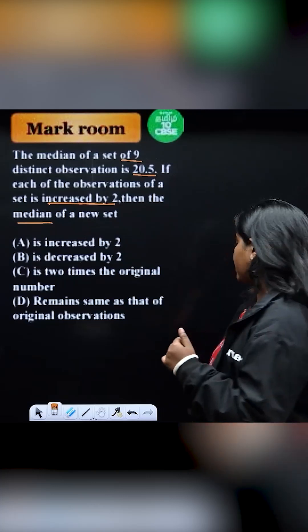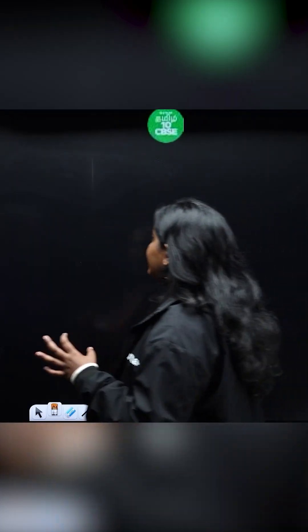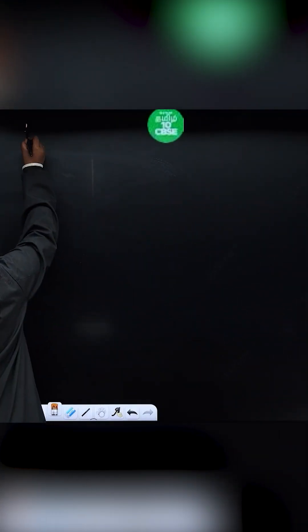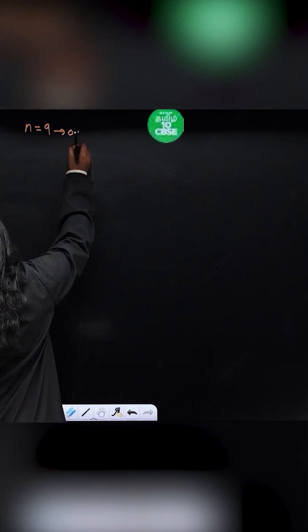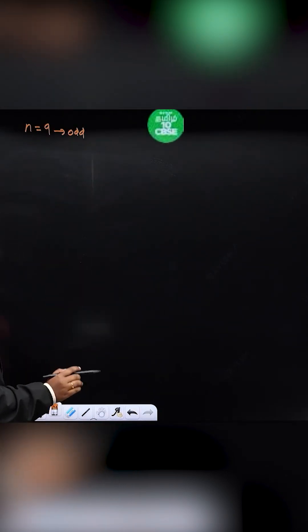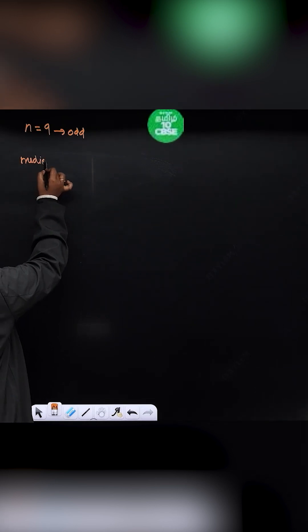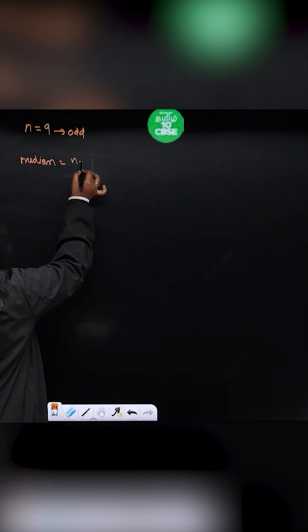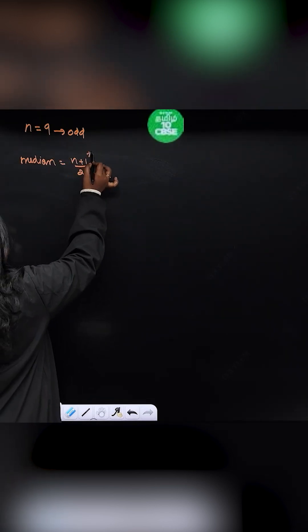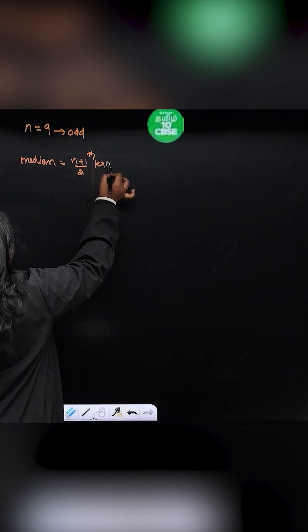So median is what? The number of observations, that is n equals 9, that is odd. Odd number of observations. Median will be equal to, median equals n plus 1 by 2th term will be the median of this observation.